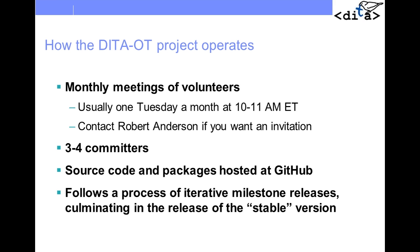We operate with a monthly meeting of volunteers — usually the first Tuesday of the month, between 10 and 11 AM Eastern. Robert Anderson is the person to contact if you want an invitation to those meetings. George and Radu from SynchroSoft are the folks that sponsor the GoToMeeting and the telephone for that event — we couldn't do it without you. There are currently three or four committers to the project, and the source code and packages are hosted at GitHub, having recently moved from SourceForge.